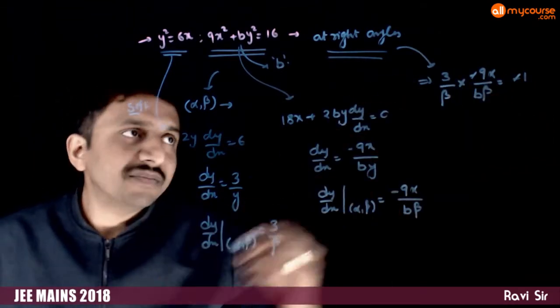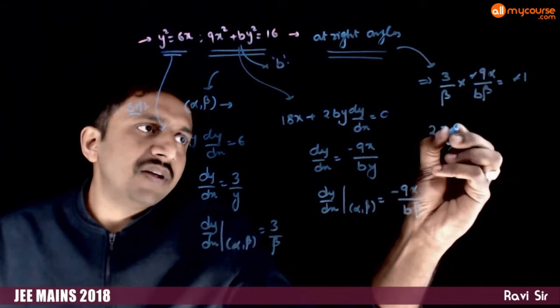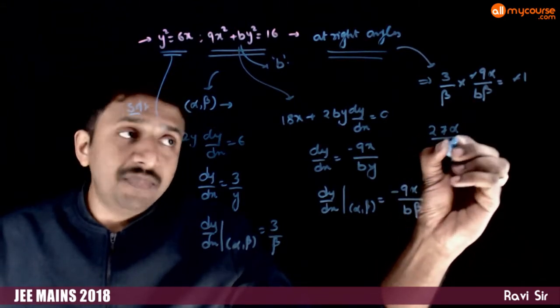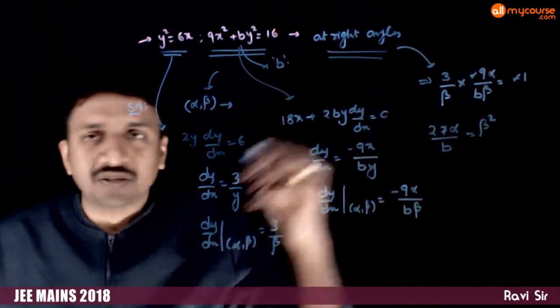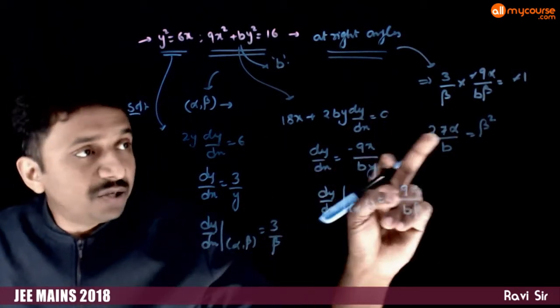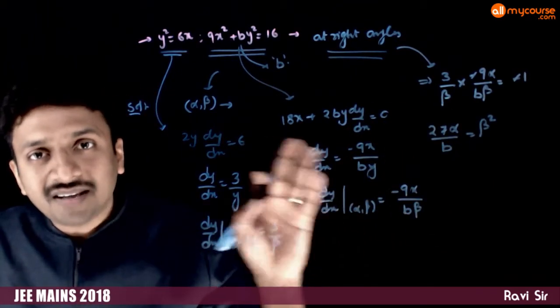Minus and minus gets cancelled. So 27 alpha by b is equal to beta square. This should be the condition between alpha and beta square.